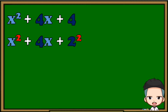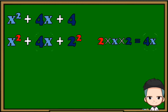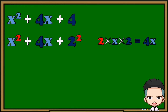Now to check the second condition, we need to put the first term and last term in their squared form. x squared is already in its squared form, and the squared form of 4 is 2 squared. Now let's multiply the constant value times the base of the first term and the base of the last term. Since the result is equal to the second term of the given, meaning x squared plus 4x plus 4 is an example of a perfect square trinomial.